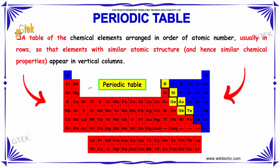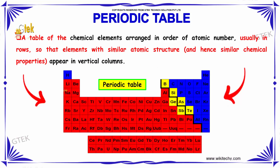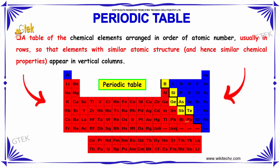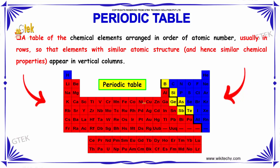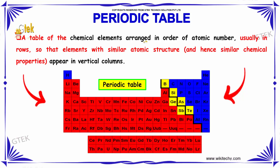A periodic table is a table of chemical elements arranged in order of atomic number, usually in rows, so that elements with a similar atomic structure — and thus similar chemical properties — appear in the same vertical column. This is the structure of your periodic table.